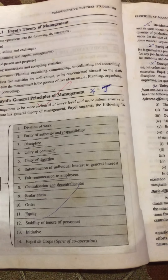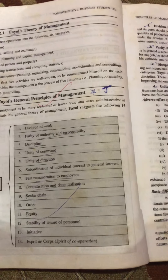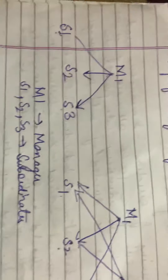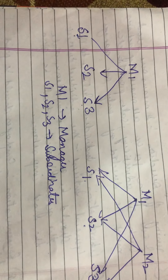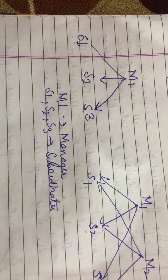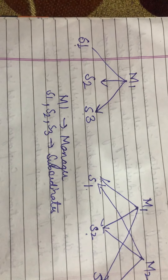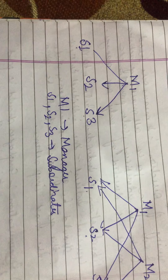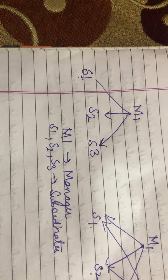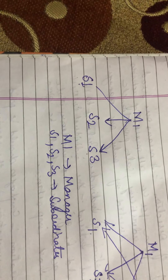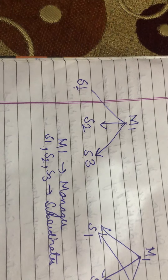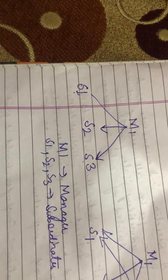Unity of command means that an employee should receive orders from only one boss. In the first diagram, there is one manager M1, and subordinates S1, S2, and S3 — all three receive orders from M1 only. S1 gets orders only from M1, and the same is the case with S2 and S3. Here, the principle of unity of command is followed. It is suggested that an individual should receive orders from one superior at a time.